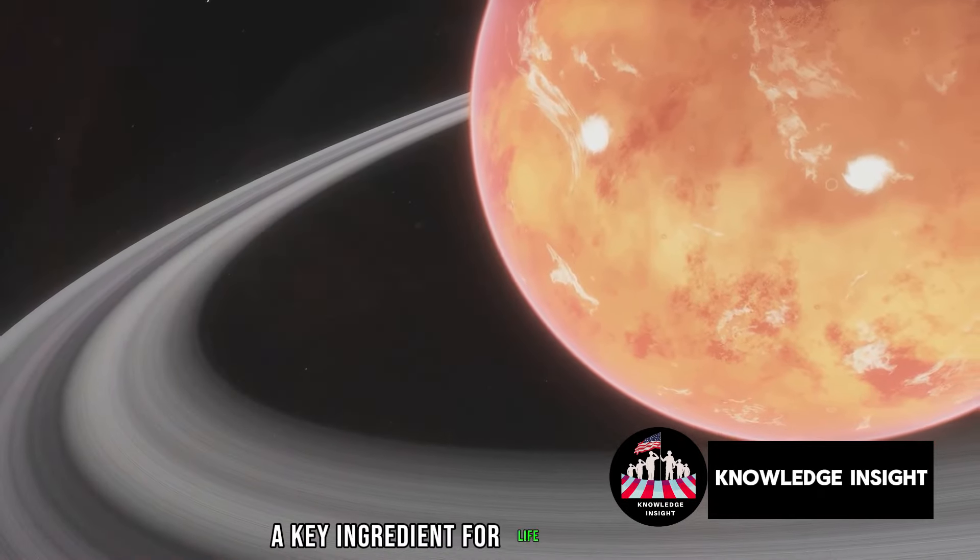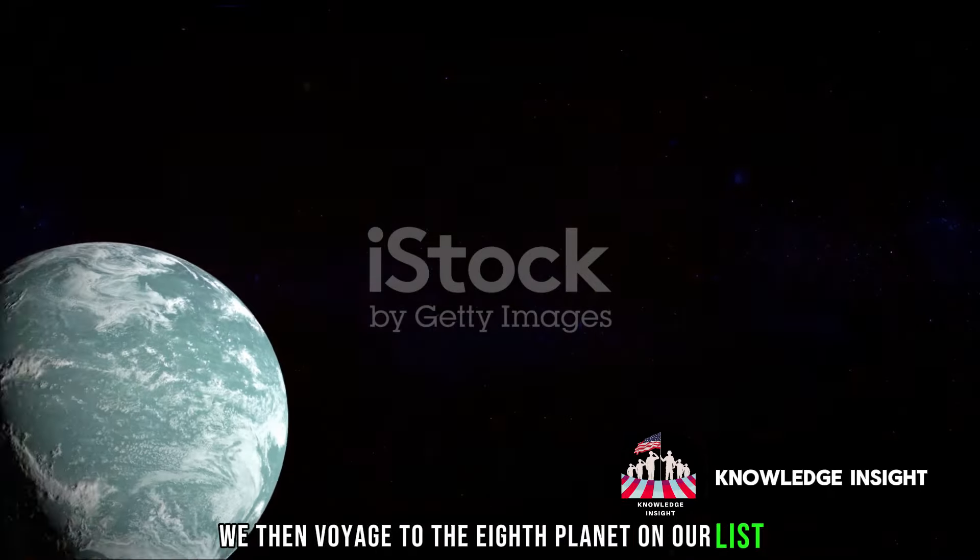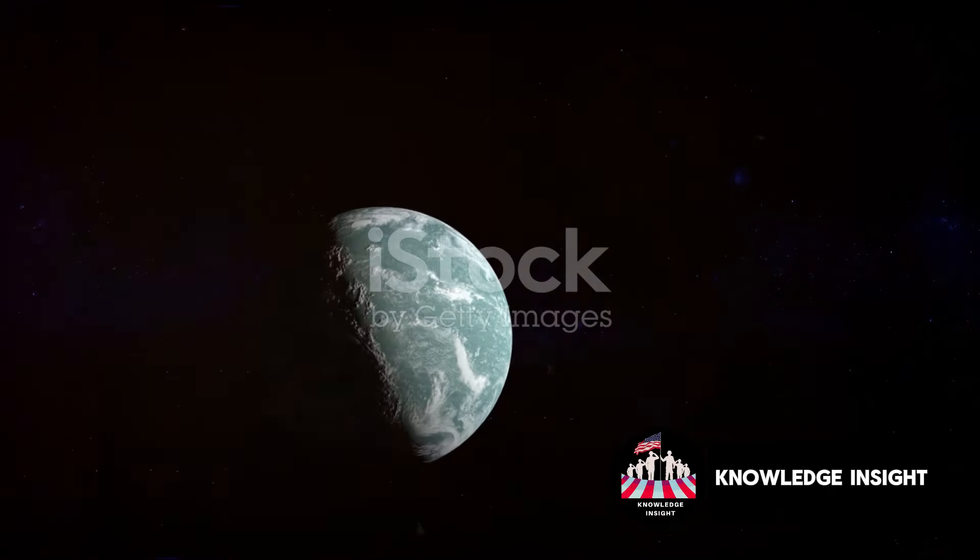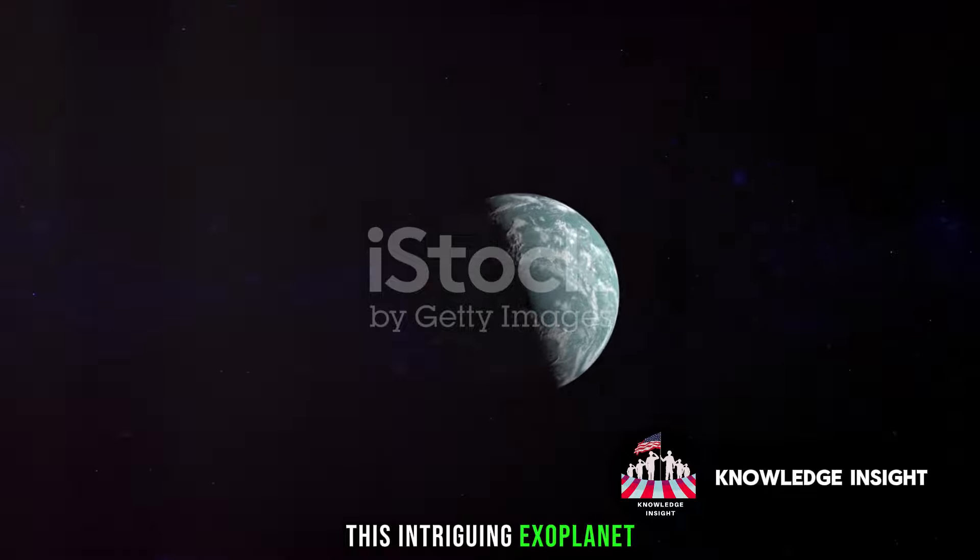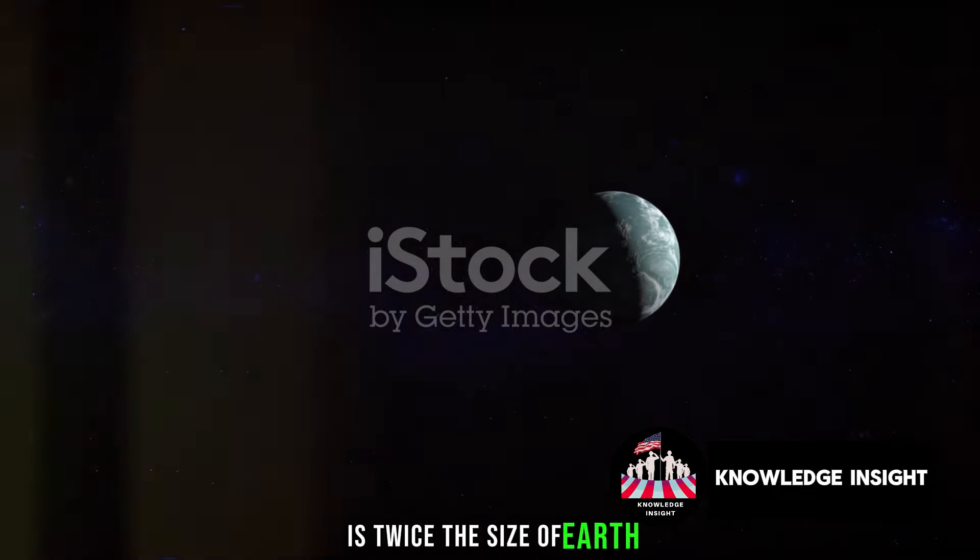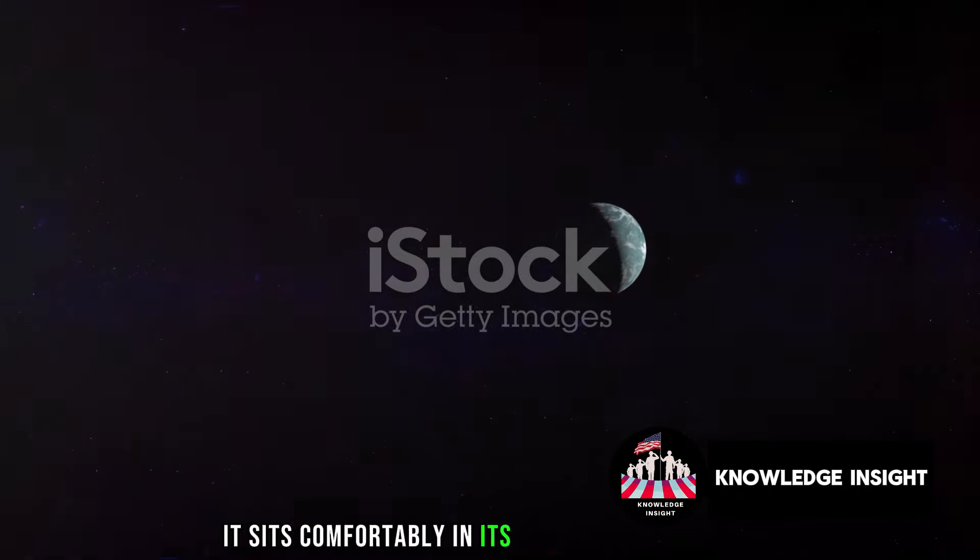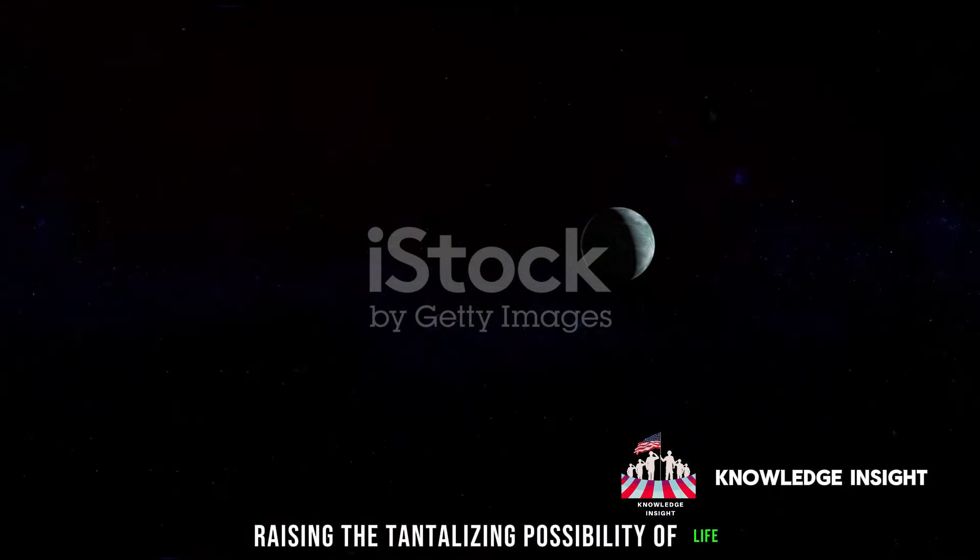We then voyage to the 8th planet on our list, Kepler-22b. This intriguing exoplanet, located 600 light-years away, is twice the size of Earth. What makes Kepler-22b special? It sits comfortably in its star's habitable zone, raising the tantalizing possibility of life.